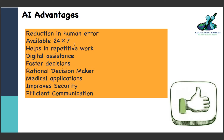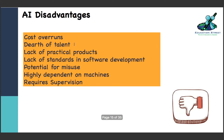Now coming to the disadvantages - a thumbs down to what AI brings along. Cost overruns - right now AI has not been very cost-efficient, and hence only big applications are able to run and be supported. So cost overruns are a major challenge.